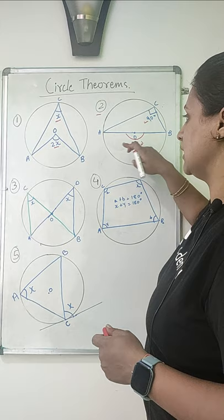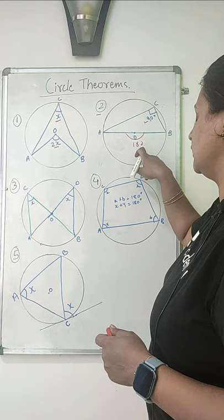diameter makes a 180-degree angle at the center and 90 degrees at the circumference, which is twice. Now the 3rd law: if the angles are in the same segment, they will always be equal.